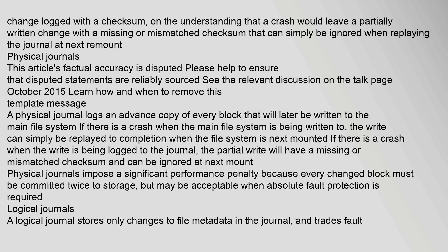A physical journal logs an advance copy of every block that will later be written to the main file system. If there is a crash when the main file system is being written to, the write can simply be replayed to completion when the file system is next mounted. If there is a crash when the write is being logged to the journal, the partial write will have a missing or mismatched checksum and can be ignored at next mount. Physical journals impose a significant performance penalty because every changed block must be committed twice to storage, but may be acceptable when absolute fault protection is required.